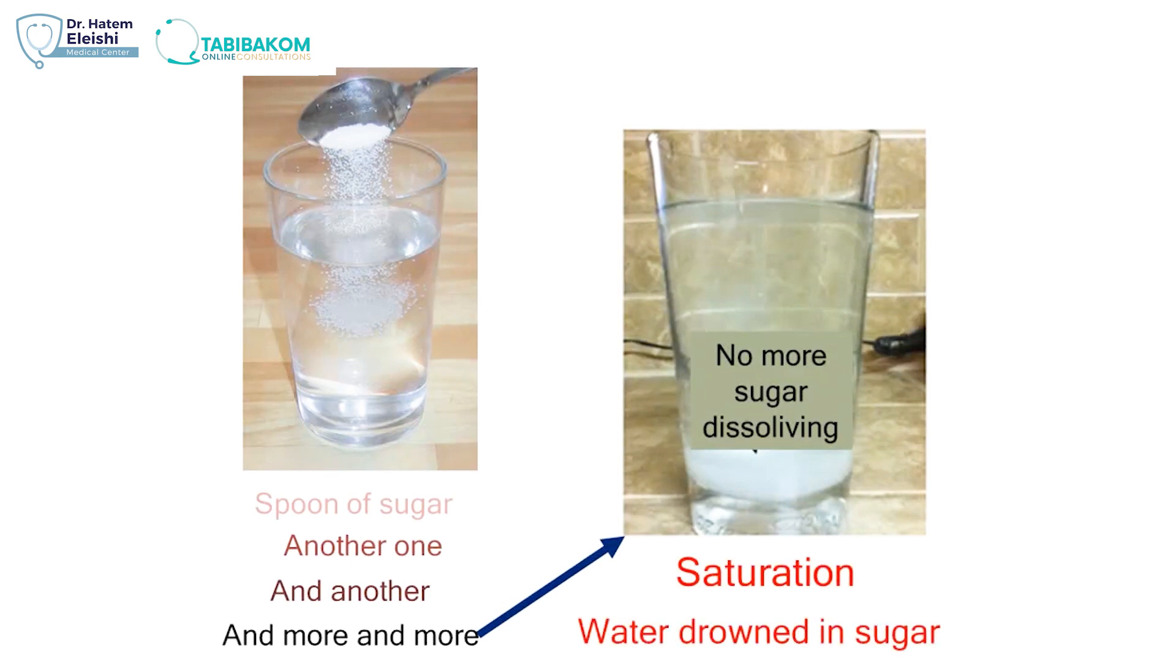You reach a stage of saturation. The water is drowned in sugar. It has no more place for sugar, so the excess sugar will deposit at the bottom of the glass of water.